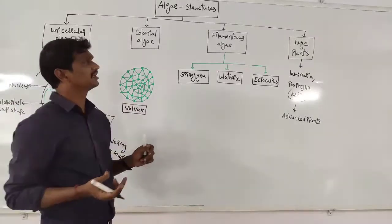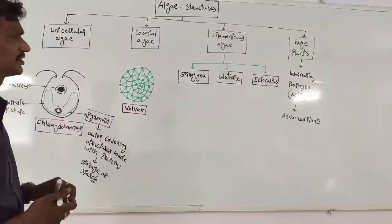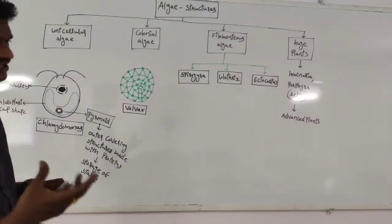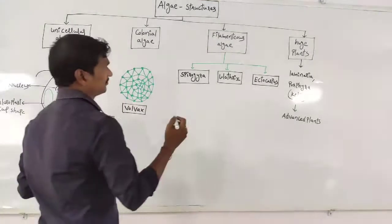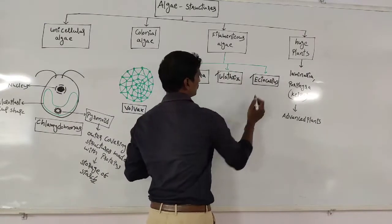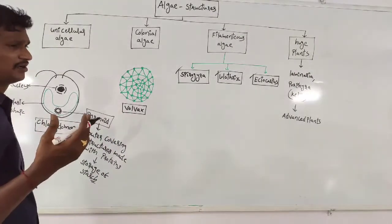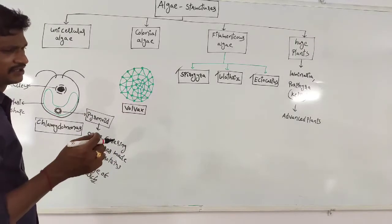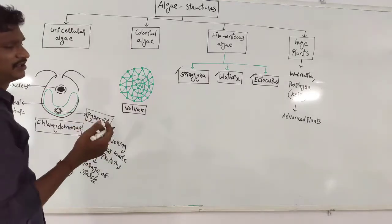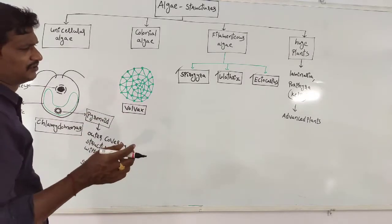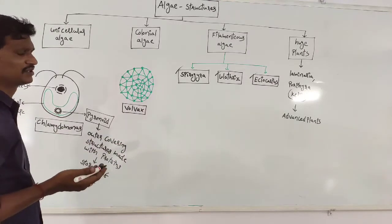Some algae are filamentous algae, which form filamentous structures. Filamentous structures are especially seen in Spirogyra, Ectocarpus, and Ulothrix. The filamentous algae examples are Spirogyra, Ulothrix, and Ectocarpus. Spirogyra especially forms a filamentous structure and also has a ribbon shape. Ulothrix is also a filamentous structure.